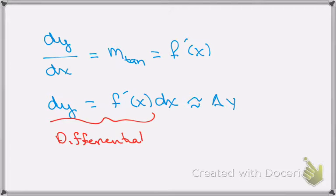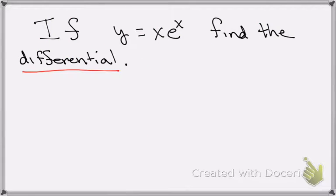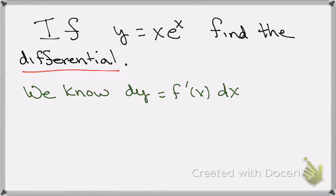Alright, so let's try an example. So if y is equal to x times e to the x, we'd like to find the differential. Now we know that the differential dy is always going to be equal to f prime of x times dx. And we know that f prime of x is equal to y prime.